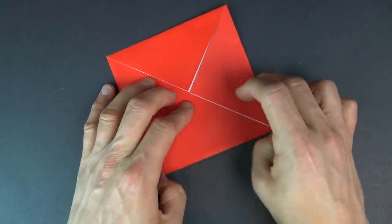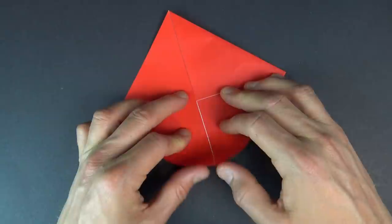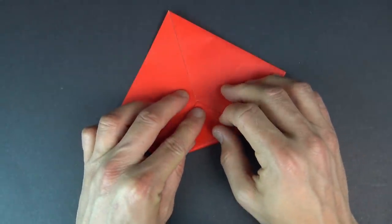And the blintz is complete, and now we're going to make another blintz. So, holding the layers down, fold all four corners to the middle.